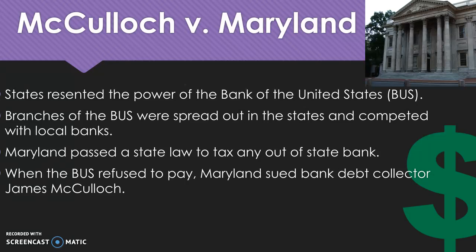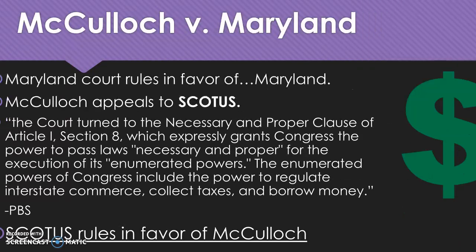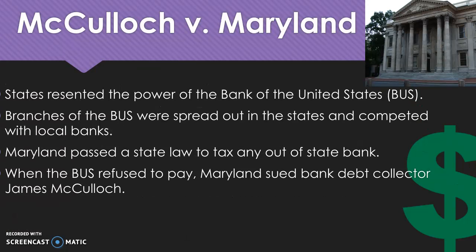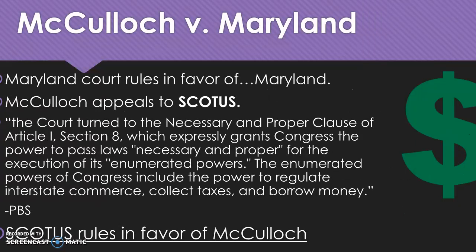A Bank of the United States opens in Maryland, and Maryland passes a law saying they will tax any out-of-state bank. So Maryland will not levy taxes on its own bank, but will tax an out-of-state bank, charging the Bank of the United States' Maryland branch with taxes for operating there. Maryland then sues James McCulloch when he refuses to pay the bill. The lawsuit goes to a Maryland court, which rules in favor of the state's initial policy, but McCulloch appeals to the Supreme Court.